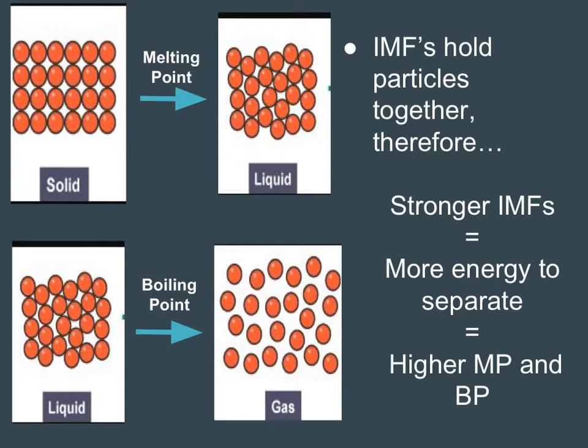If you have really strong intermolecular forces, it's going to be more difficult to get it to evaporate because it holds on to surrounding molecules stronger. If it's really weak, it's going to be very easy. So it would be a higher boiling or melting point for something that has very strong IMFs.